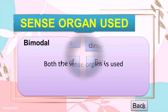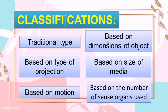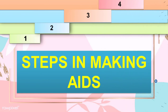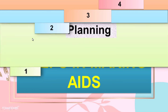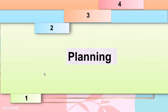Those are the six classifications of the audiovisual or teaching aids. Now let's proceed to the steps in making aids. There are four steps. The first one is planning — you should clearly know the objectives of your presentation, plan well in advance, anticipate the problems, anticipate the size of the audience, and think about the quality of material to be used, appropriateness to the subject, and availability of facilities for its use.